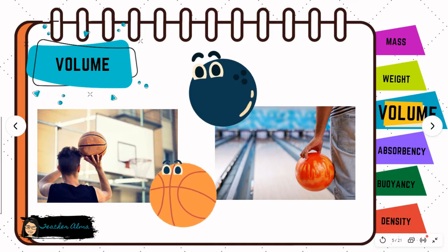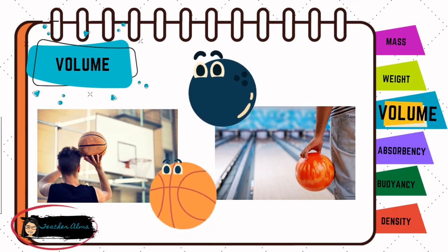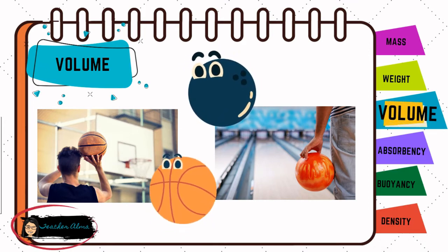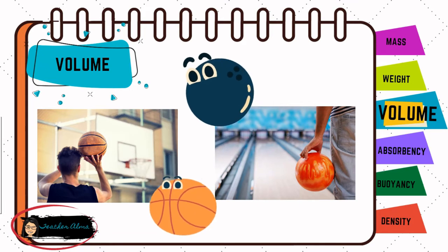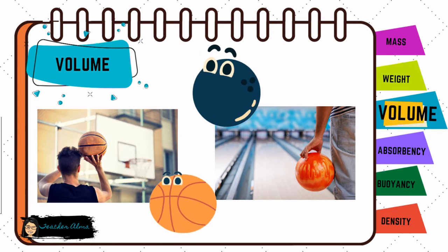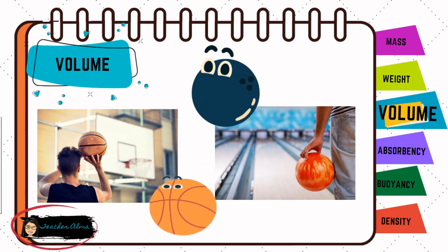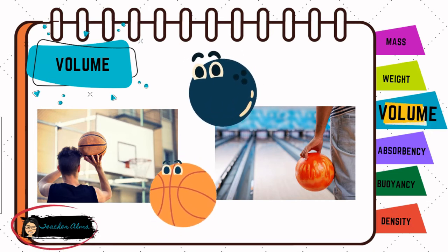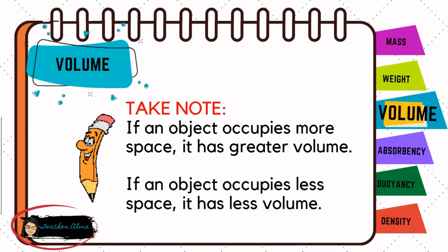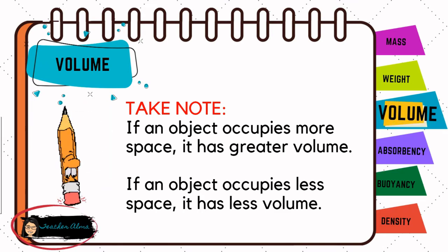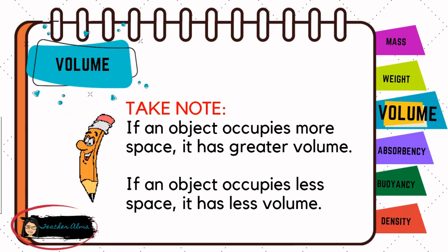The bowling ball and the basketball approximately have the same amount of space. Therefore, the two balls have about the same volume. Although the basketball is hollow, it is not empty. Air fills up the space inside the basketball. Air and other gases take up space and have volume too. If an object occupies more space, it has greater volume. If an object occupies less space, it has less volume.